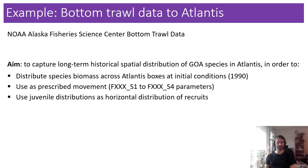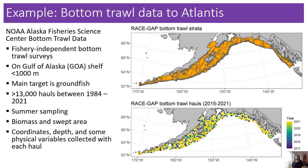We also want to use juvenile distributions for the distribution of recruits in the biology. A couple of words about this dataset: it is a fishery-independent survey using bottom trawl sampling in the Gulf of Alaska. It is a shelf survey covering areas shallower than 1,000 meters depth, mostly focused on groundfish. It counts over 13,000 hauls from 1984 to present. It is a summer sampling, and it reports biomass and swept area from which you can get CPUE. It comes with coordinates, depth, and physical variables for each haul.